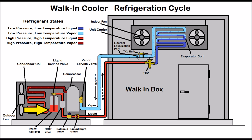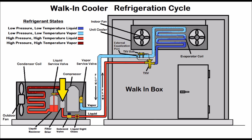The sub-cooled liquid then gets sucked up through the liquid service valve on the top of the receiver and goes through the filter dryer. The filter dryer's job is to store any water vapor and contaminants so that they do not interact with the refrigerant oil. If water vapor and refrigerant oil mix, it turns into alcohol and acids. The sub-cooled liquid refrigerant then heads through the filter dryer and through the solenoid valve.